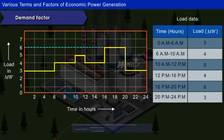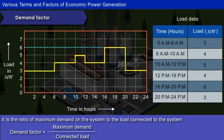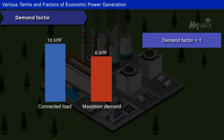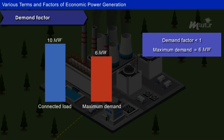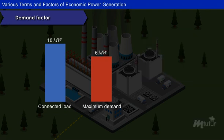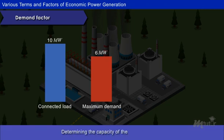Demand Factor: It is the ratio of maximum demand on the system to the load connected to the system. It is always less than unity because maximum demand on the power station is generally less than the connected load. For example, the maximum demand on the power station is 6MW and the connected load on the power station is 10MW. Then, the demand factor is equal to 6 divided by 10, which is equal to 0.6. The demand factor plays a vital role in determining the capacity of the plant equipment.